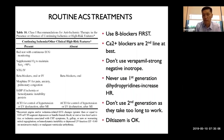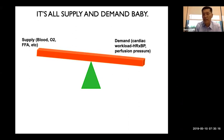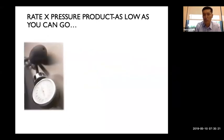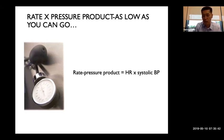It's all about supply and demand. Supply is blood, oxygen, and free fatty acids. Demand is cardiac workload — essentially heart rate times blood pressure, called the rate pressure product. Slowing the heart rate and lowering blood pressure reduces the rate pressure product and decreases cardiac stress. This is easily achieved with nitroglycerin, morphine, and beta blockers.